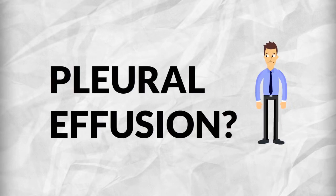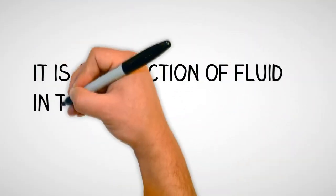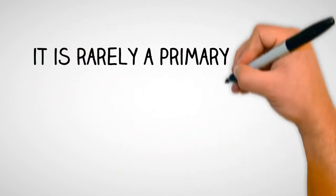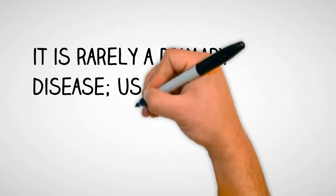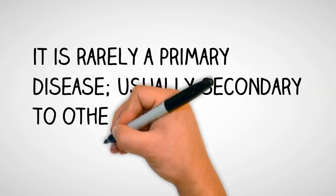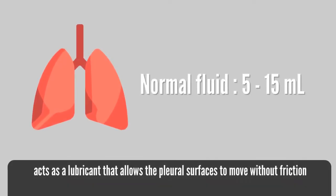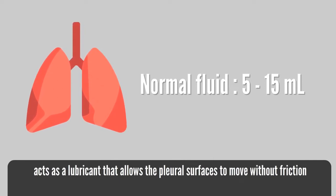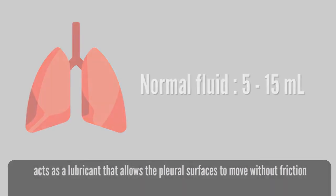What is pleural effusion? Pleural effusion is a collection of fluid in the pleural space. It is rarely a primary disease process and is usually secondary to other diseases. Normally, the pleural space contains a small amount of fluid ranging from 5 to 15 ml, which acts as a lubricant that allows the pleural surfaces to move without friction.